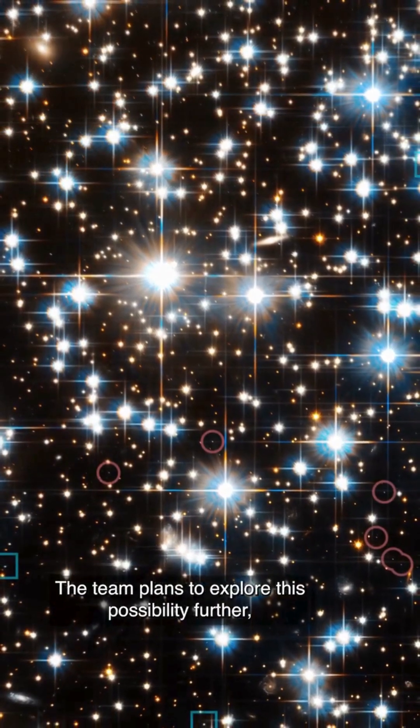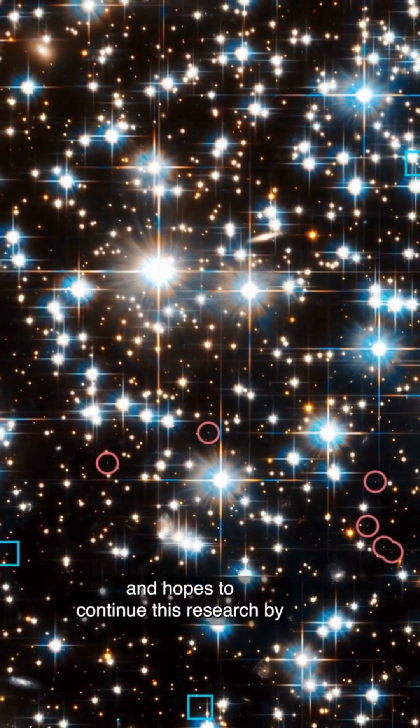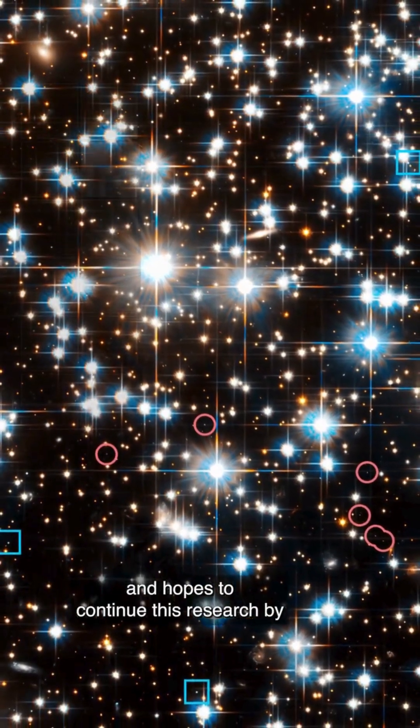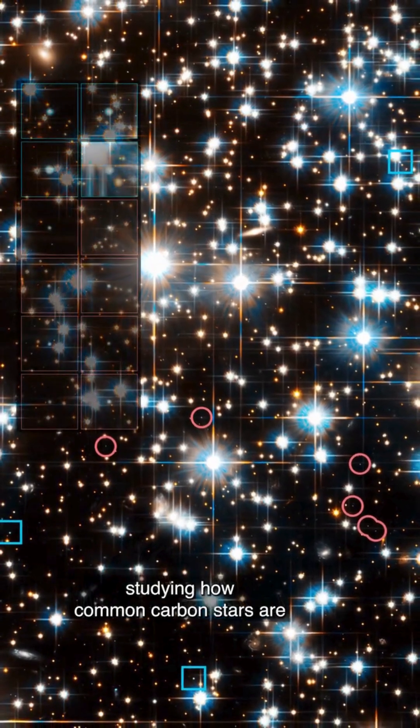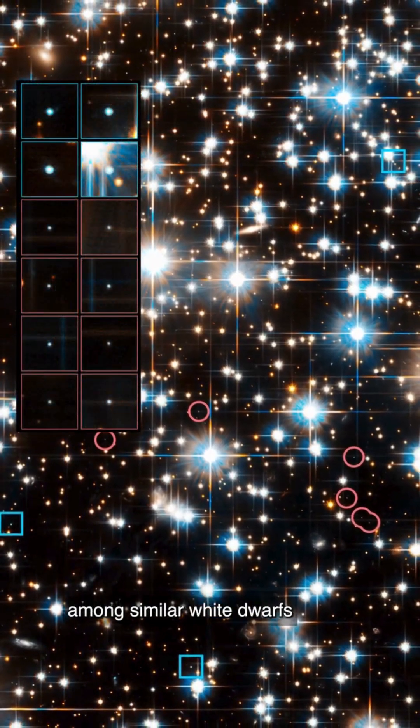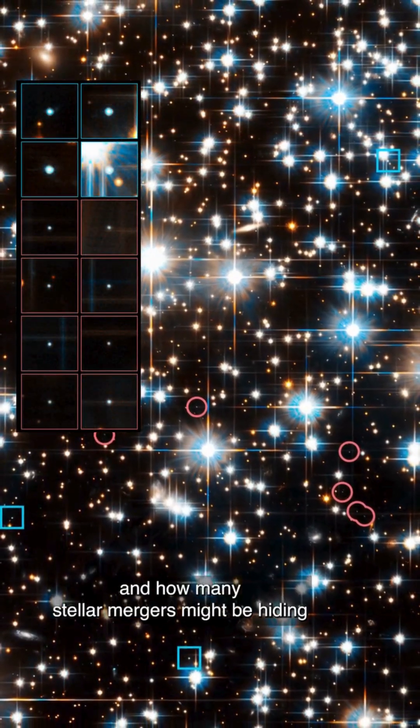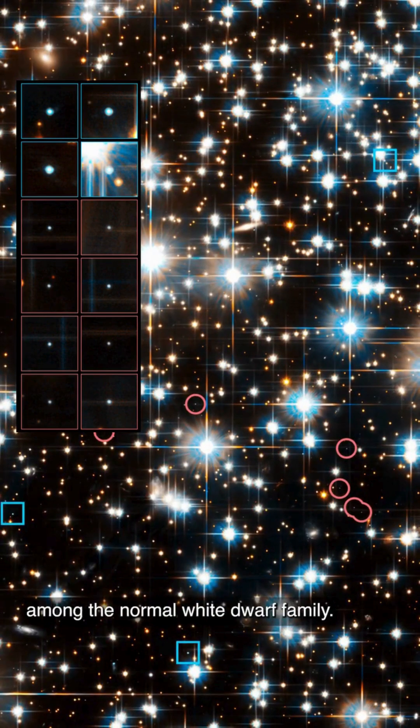The team plans to explore this possibility further, and hopes to continue this research by studying how common carbon stars are among similar white dwarfs, and how many stellar mergers might be hiding among the normal white dwarf family.